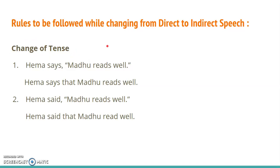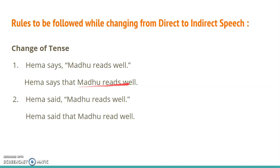If the sentence begins in the present tense and the reporting verb is in the present or future tense, there is no change of tense. Look at the example: 'Hema says Madhu reads well.' Here the reporting verb 'says' is in present tense, so when you change it into indirect speech, you don't have to change the tense of 'reads.' So you will write: 'Hema says that Madhu reads well.'